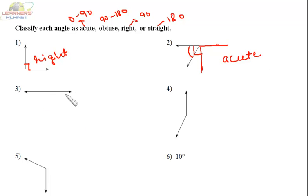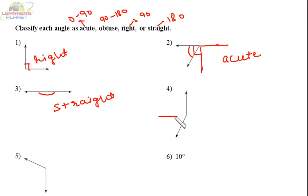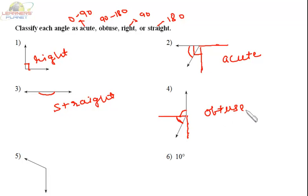Similarly, this is a straight line, so it's a straight angle. Here we can say this is 90 degrees, and this angle is more than 90 but less than 180, so it's an obtuse angle. Similarly, the next one is also more than 90 but less than 180, so it is an obtuse angle.